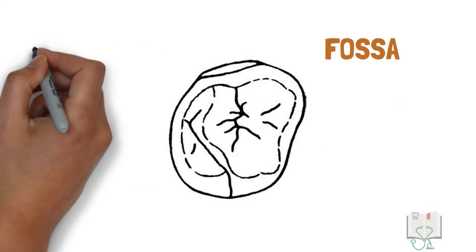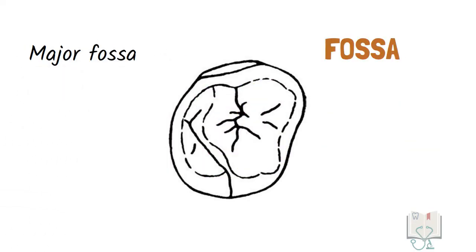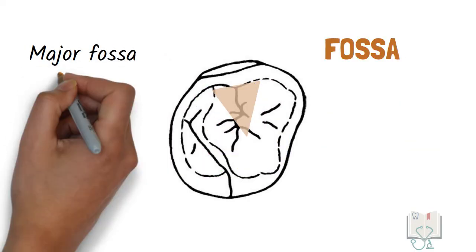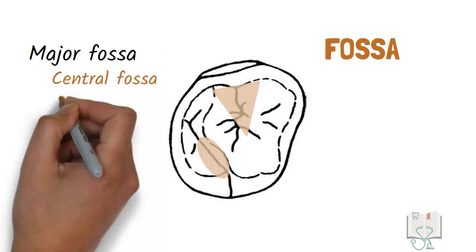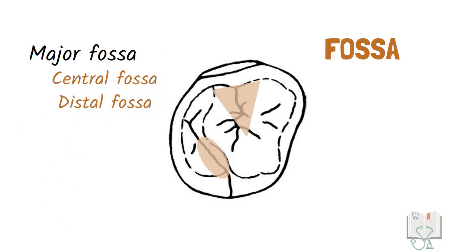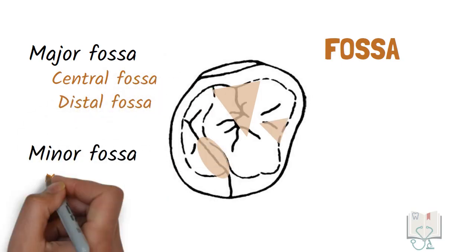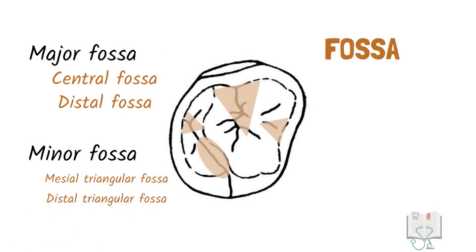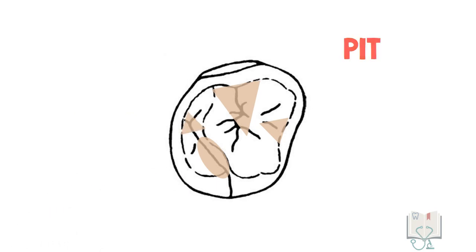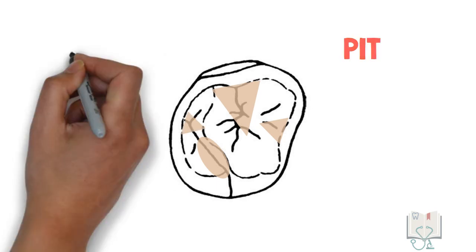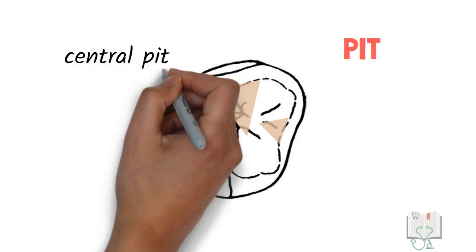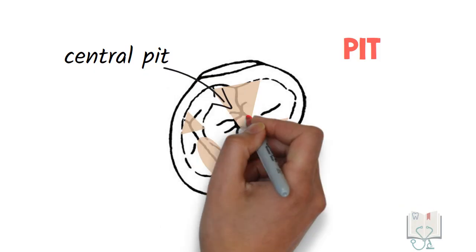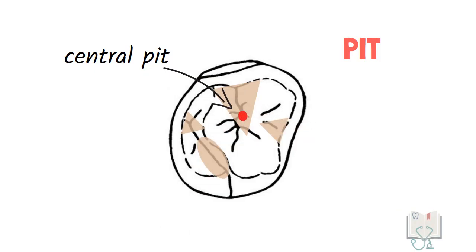Fossa: there are two major fossae — the central fossa and the distal fossa — and two minor fossae — the mesial triangular fossa and the distal triangular fossa. There is one pit called the central pit, which is present at the center of the central fossa.